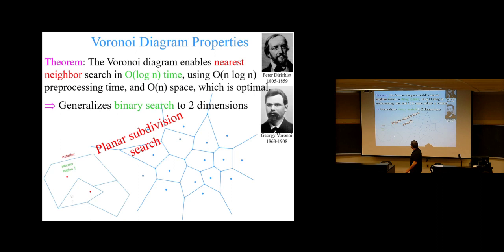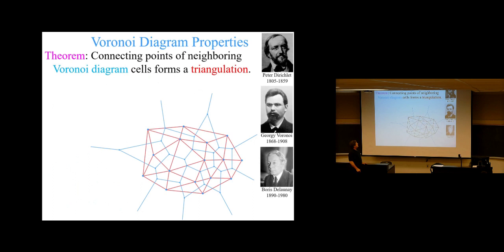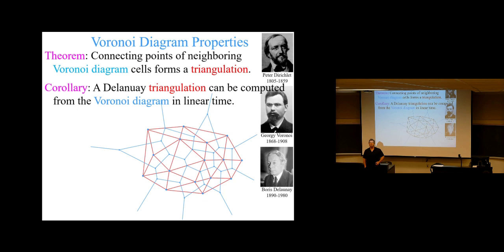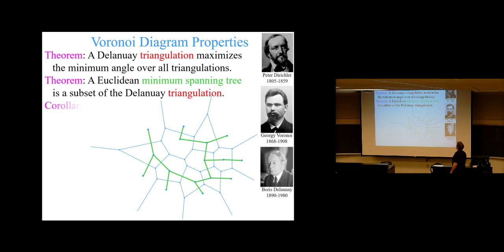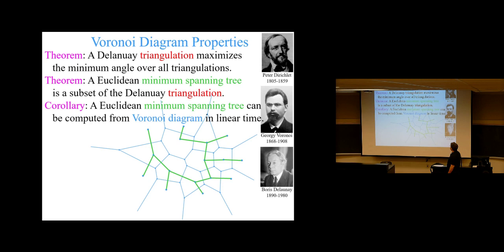The graph dual of the Voronoi diagram is a Delaunay triangulation. The Delaunay triangulation connects all points which have a neighboring shared cell border, and it gives you a nice triangulation. It has the property that it maximizes the minimum angle over all possible triangulations — it could be an exponential number of those. Minimum spanning trees are a subset of the Delaunay triangulation, actually.